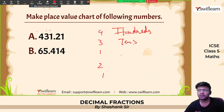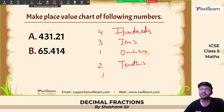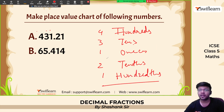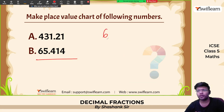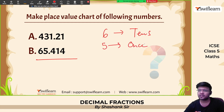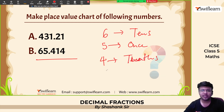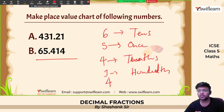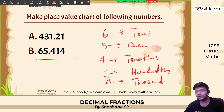Now extending beyond the decimal point: after ones we have the tenths place (T-E-N-T-H-S), then the hundredths place (H-U-N-D-R-E-D-T-H-S), then the thousandths place (T-H-O-U-S-A-N-D-T-H-S). For example, 65.41 — six is in the tens, five is in the ones, four is in the tenths place, and one is in the hundredths place.